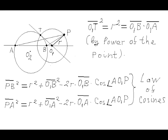First, we'll use the power of the point theorem to write the equality. The length of segment O1T squared equals R squared, where R is the radius of circle O1, equals the length of segment O1B times the length of segment O1A.